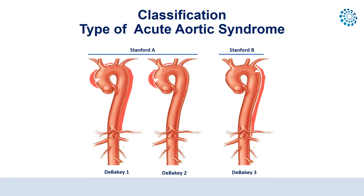There are several classifications of Acute Aortic Syndrome depending on the involvement of the ascending aorta. In the Stanford classification, Type A is defined when the ascending aorta is involved, and Type B when it is not. In the DeBakey classification, Type 1 involves both ascending and descending aorta, Type 2 only the ascending aorta, and Type 3 only the descending aorta.